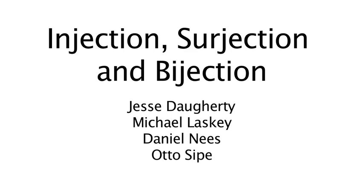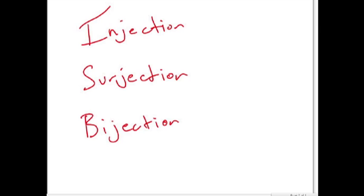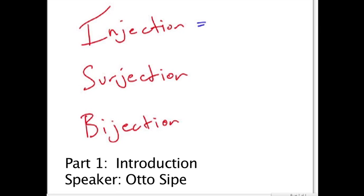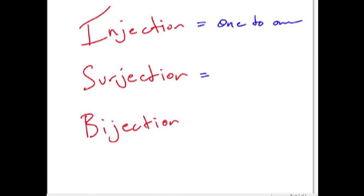Hi, my name is Otto, and our group is going to talk about injection, surjection, and bijection. Injection is also known as one-to-one. Surjection is known as onto, and bijection is defined as both one-to-one and onto.